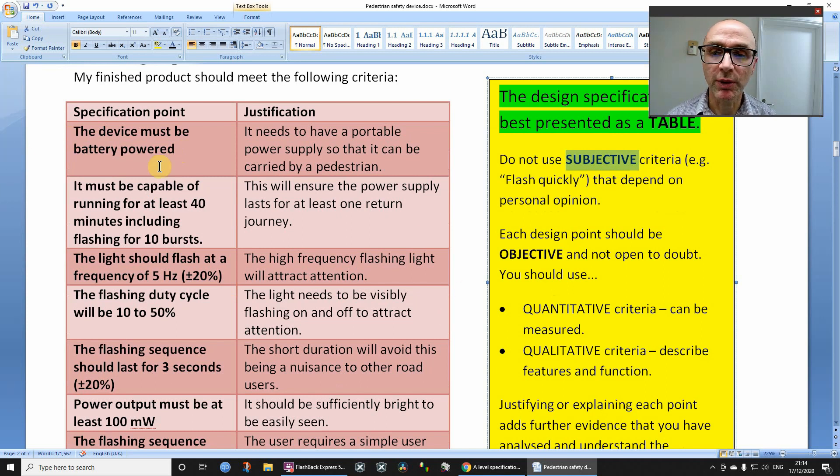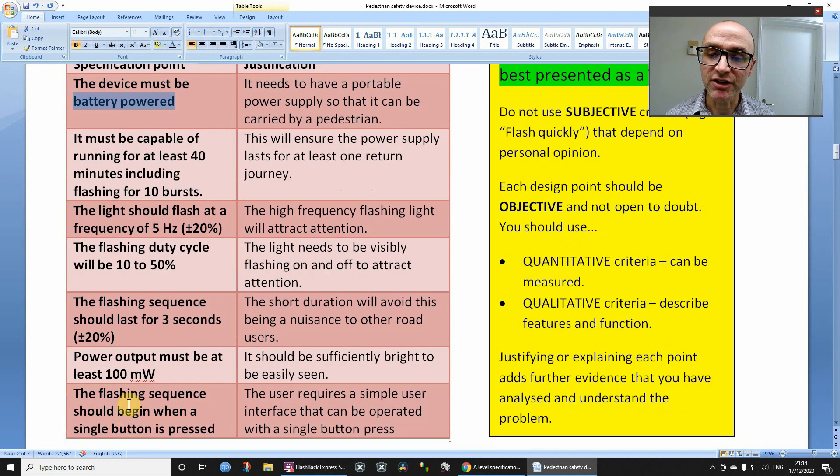And then also, we can split these objective points into things that are quantitative, that in other words, quantities, things that we can specify as a number, for example, must be able to run for at least 40 minutes. And qualitative, now qualitative are just features, so for example, it must be battery powered. I'm not saying how many batteries, I'm just saying it must be battery powered. A flashing sequence should begin when a single button is pressed. Now that is a quality, that's a feature, or a function, it's not a quantity. I'm not saying how many times that button, although I did take a single button, but I'm not saying how many times that button will be pressed.